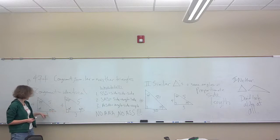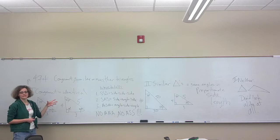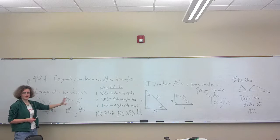And the last one is start at an angle, go to the next side, go to the next angle. If any of those three ways are identical, you know you have a congruent triangle.